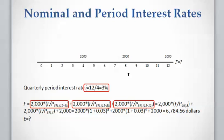The second $2,000 is paid at the end of the second year or eighth quarter, which is four quarters away from the future time. The last $2,000 is paid at the end of the third year or twelfth period, which is the same time as our desired future time, so n, or the time difference, would be zero.